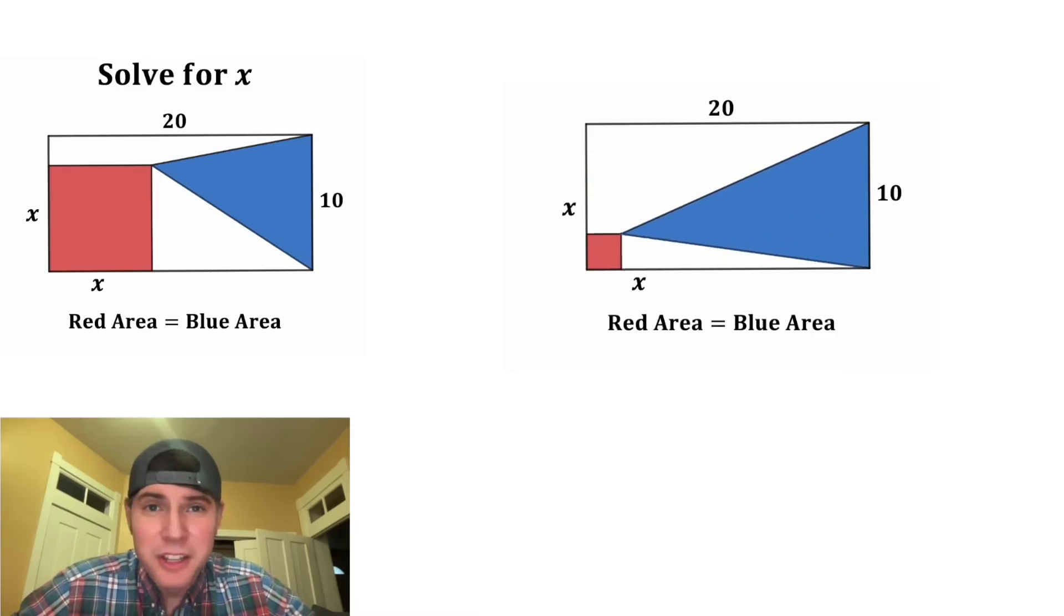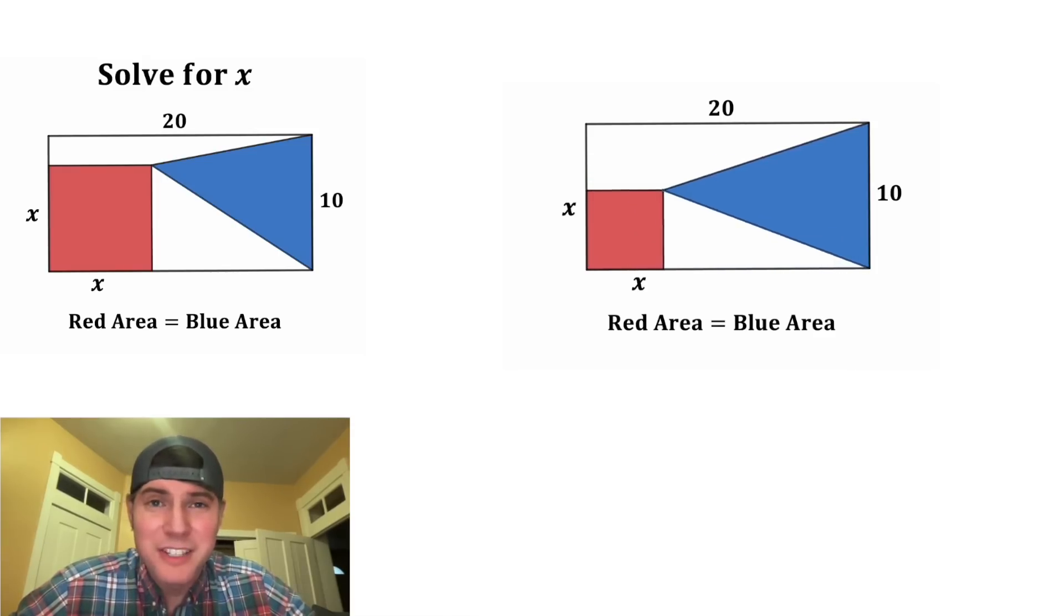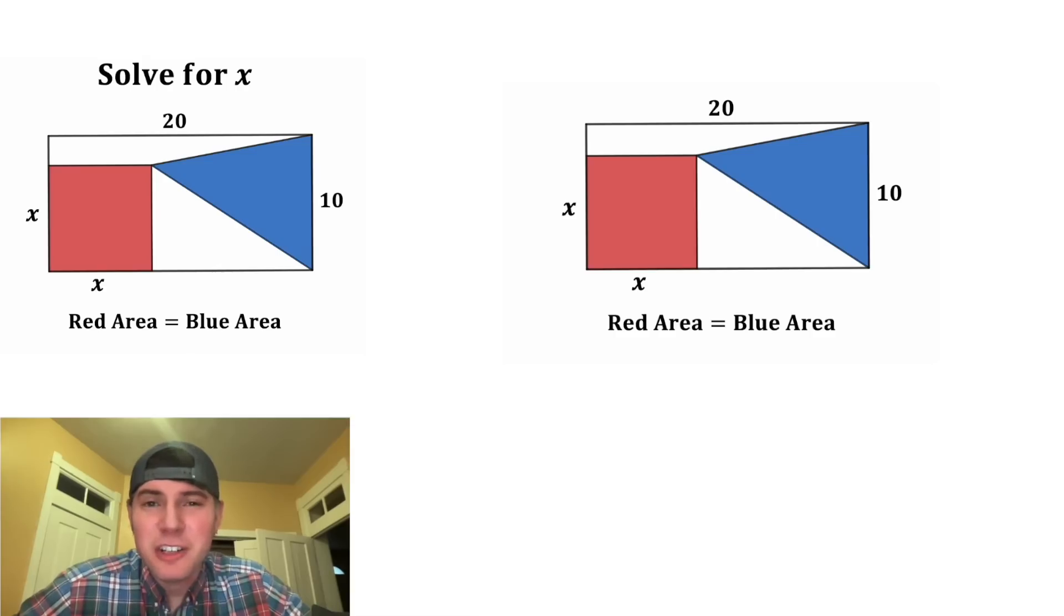Ultimately, the square could be in any one of these spots, but only one of them has the areas that are the same. Spoiler alert, we're gonna end up with a positive value or a negative value, and we usually dismiss the negative value. But for this video, I also want to explore what the negative value would mean. I bet it's gonna be pretty cool.